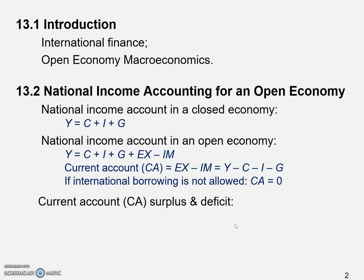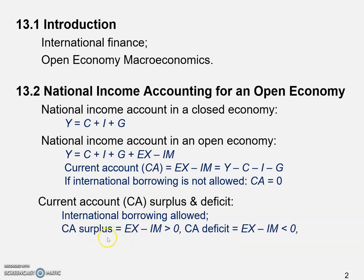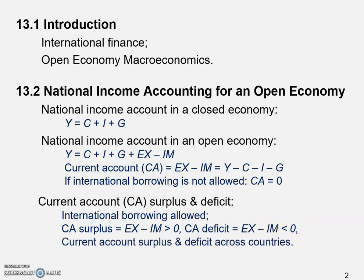Now let's talk about current account surplus and deficit, where international borrowing is allowed. A CA surplus means exports minus imports is greater than zero — the money we earned is greater than the money we spent. Conversely, a CA deficit means the money we earned is less than the money we spent — this is the case for the US.